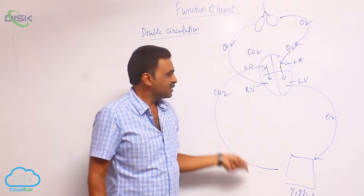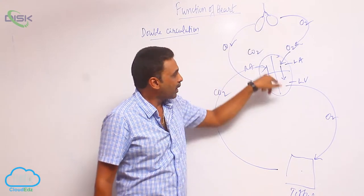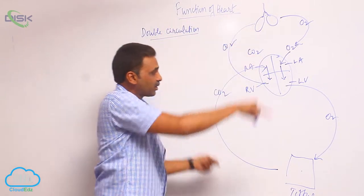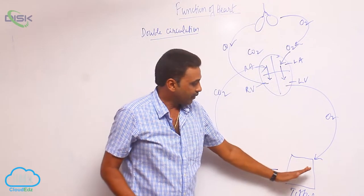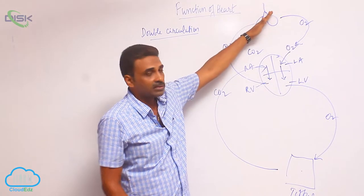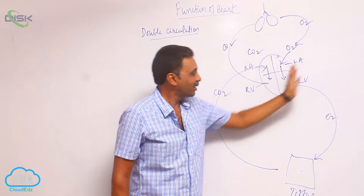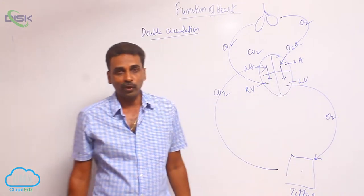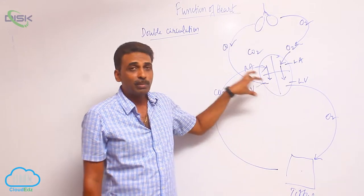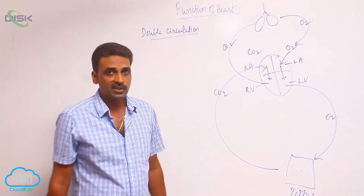So this is one circuit. The blood will pass through the heart twice in one circuit — from the tissues it is coming to the heart, from the heart it is going to the lungs, from the lungs again it is coming to the heart, and from the heart it is pumped to all parts of the body. In one circuit, the blood is passing through the heart twice — that is why it is called double circulation.